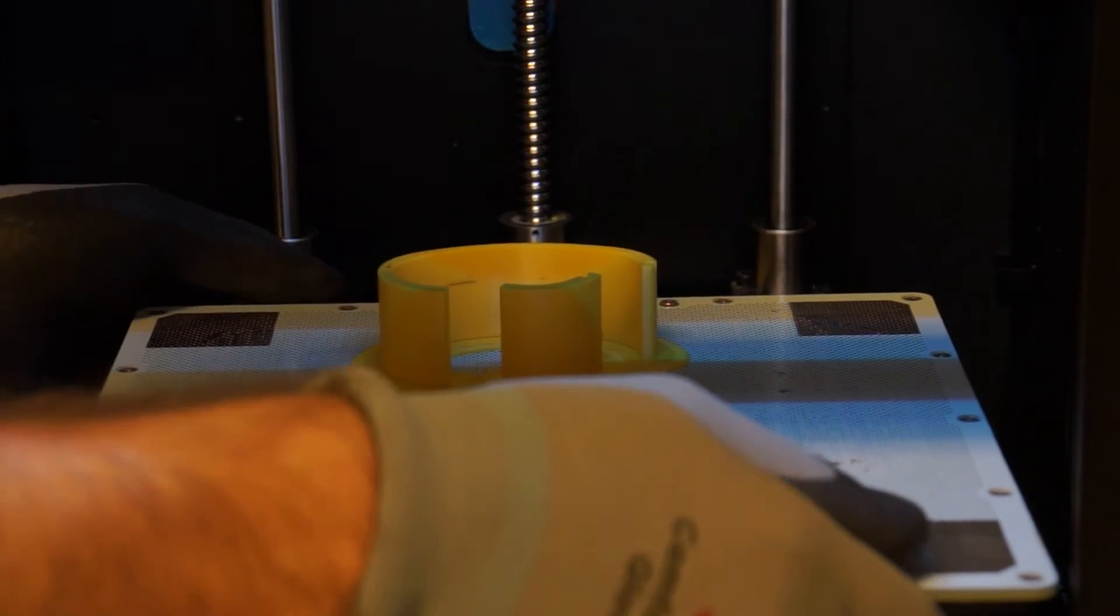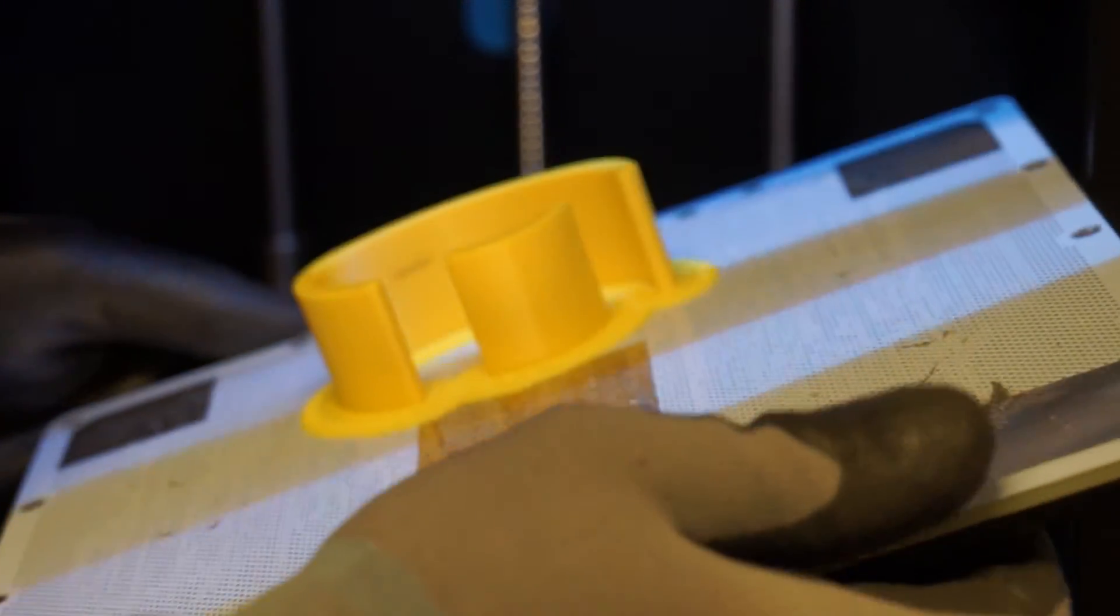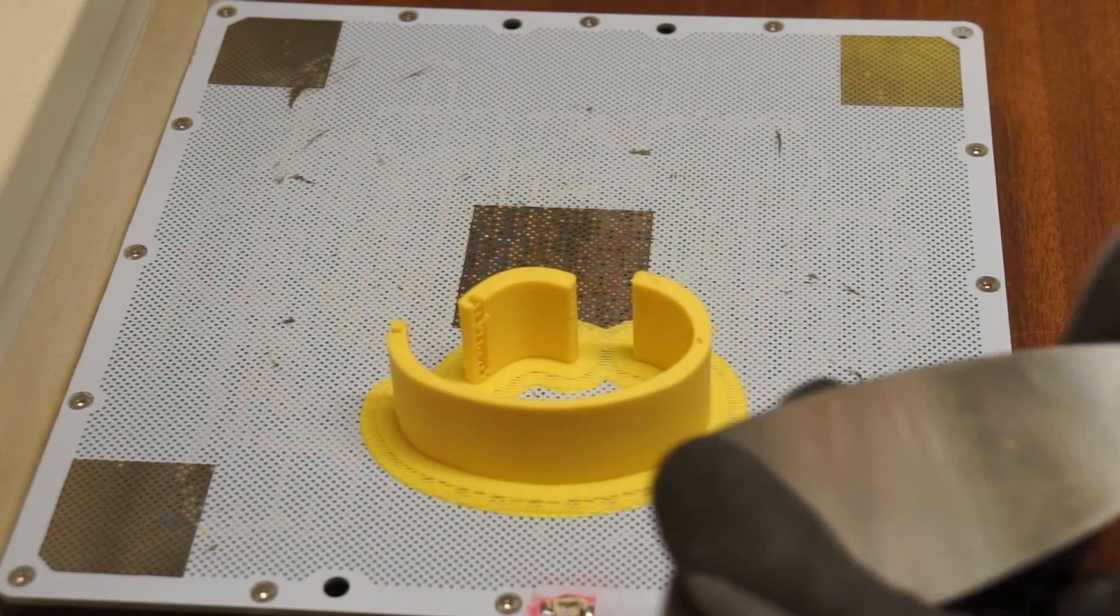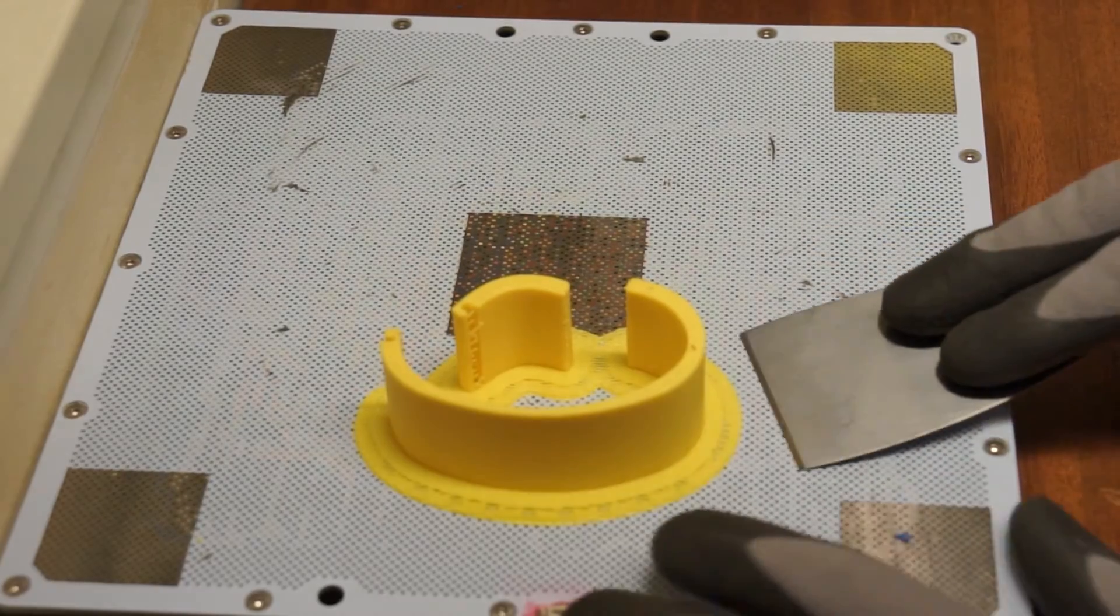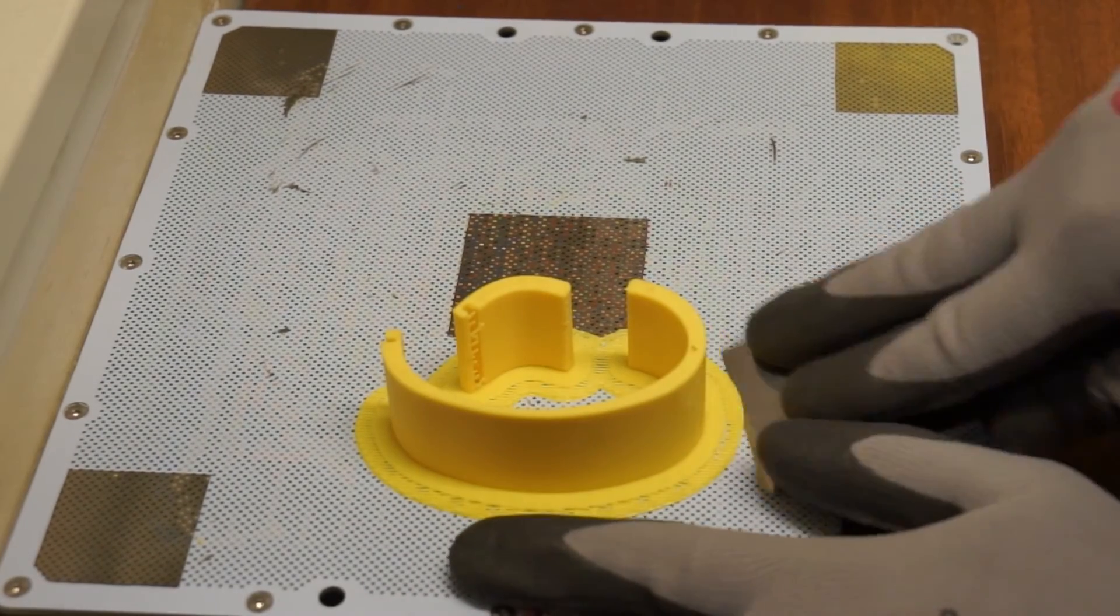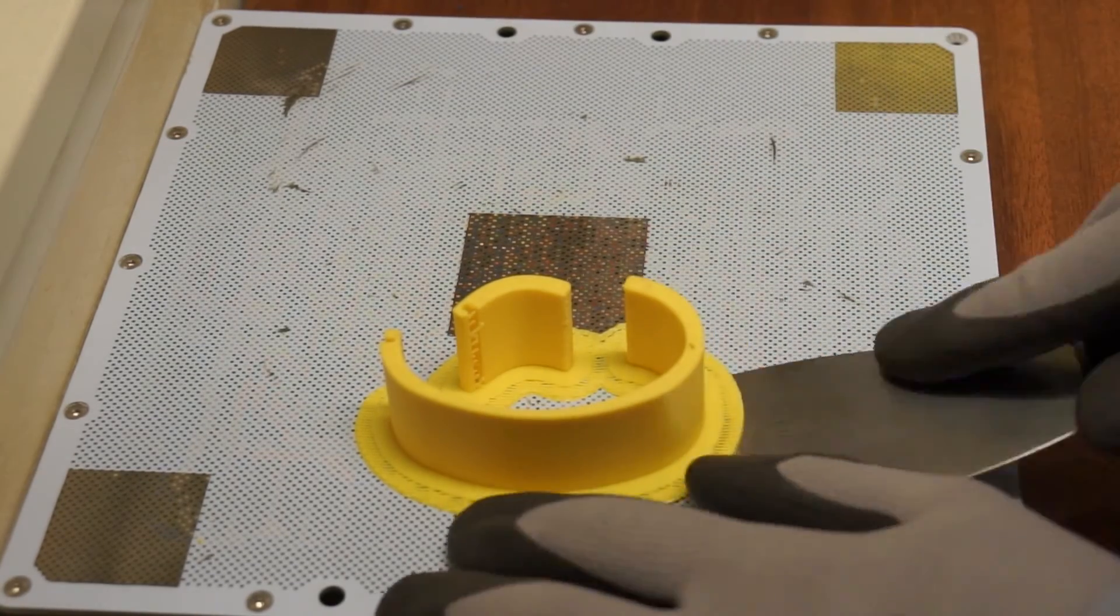You can see here I just unclip the bed and I'm taking it out so that I can remove my print because basically it's glued sort of in a way to the base. Here we use a nice sharp spatula with a flat side and cut away the base on a real low angle so you don't damage the bed of the 3D printer.